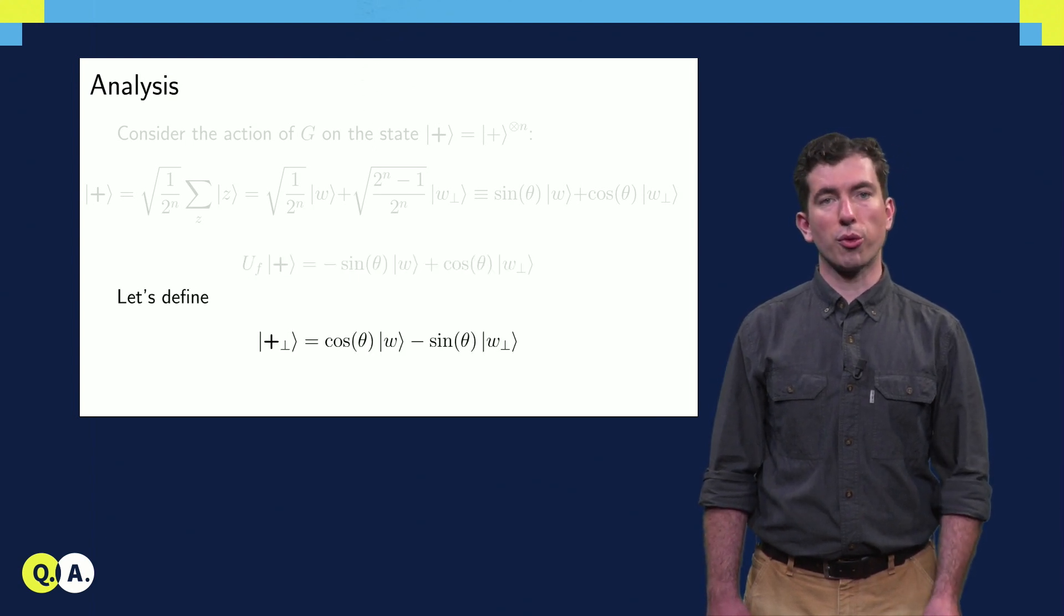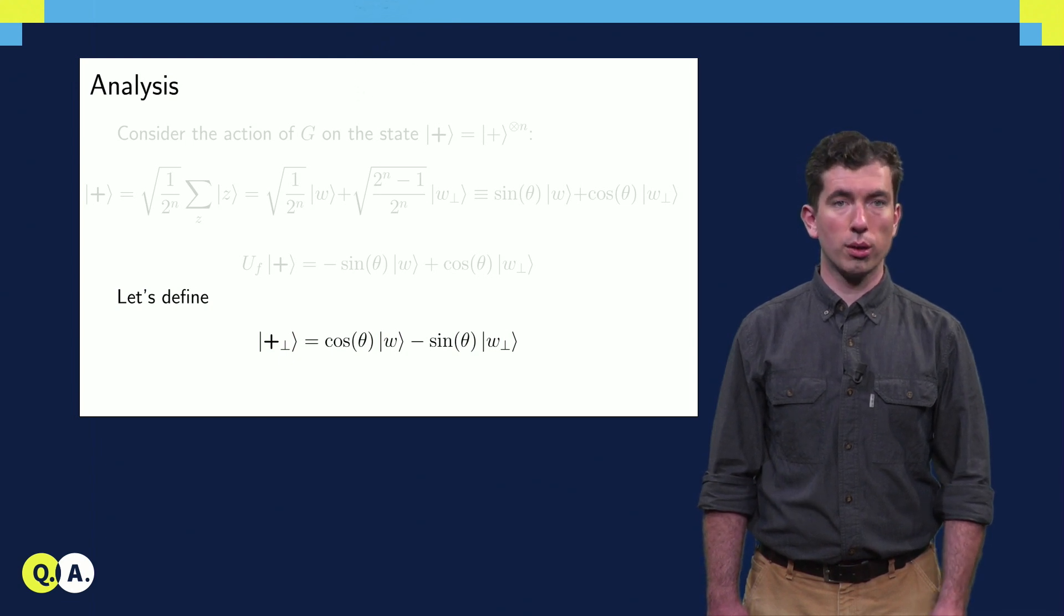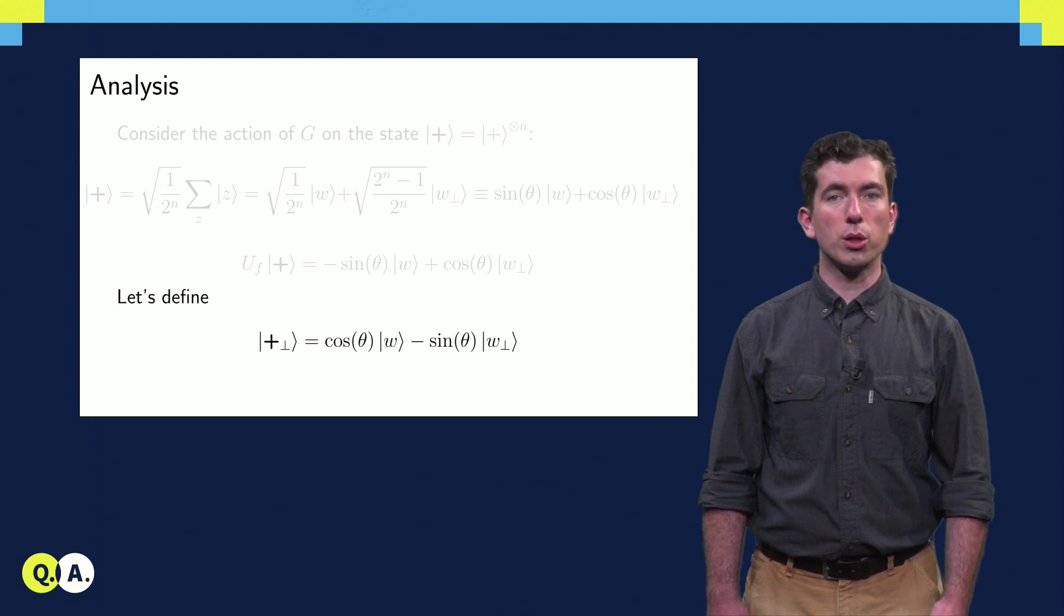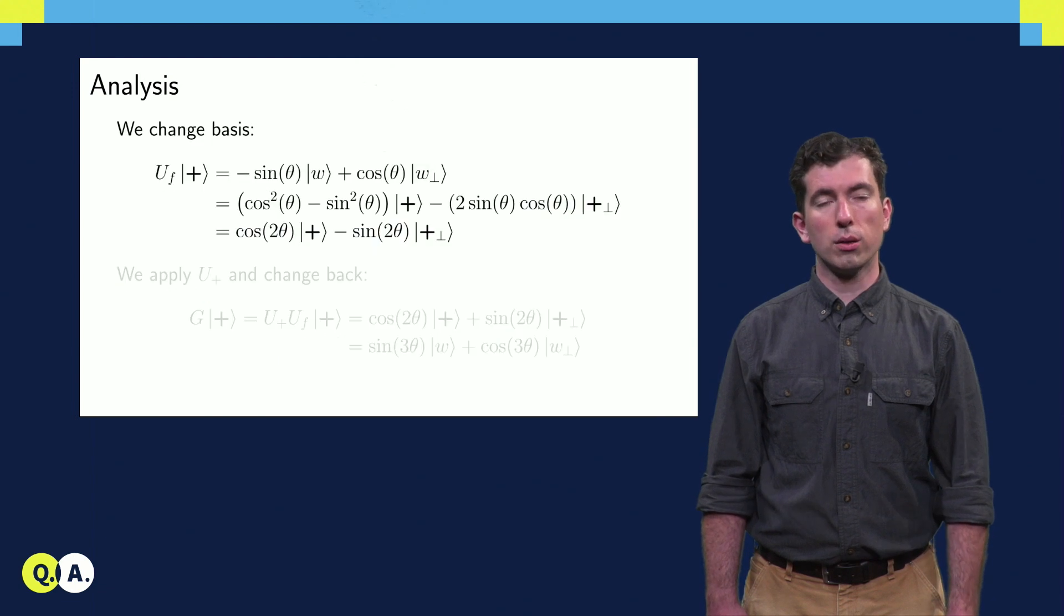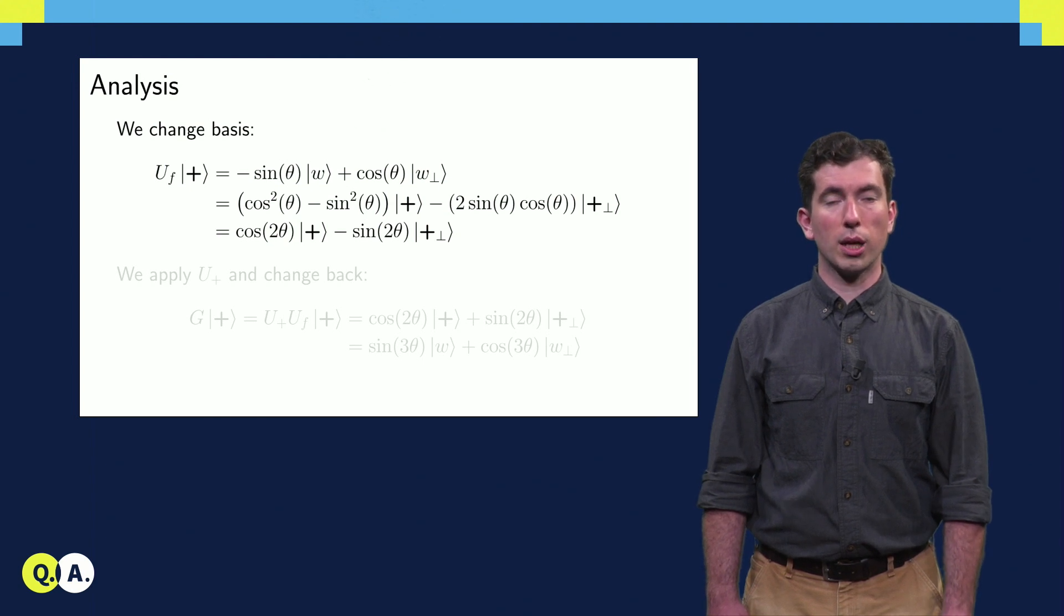To see the consequence of then performing U+, though, we'll have to define another state, plus perp, which is just a state that's orthogonal to the all-plus state, written out using W and W perp. Now we can express Uf plus in the plus plus perp basis using a little bit of trigonometry. Eventually, we get to the expression cosine of 2 theta plus minus sine of 2 theta plus perp.